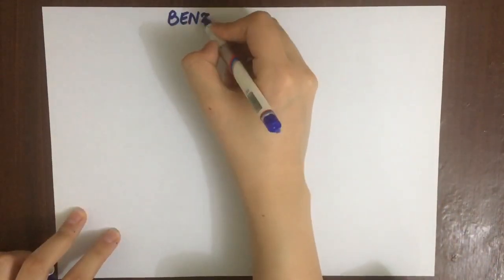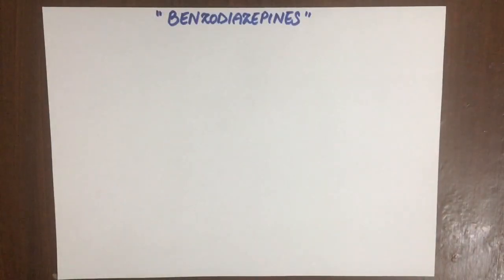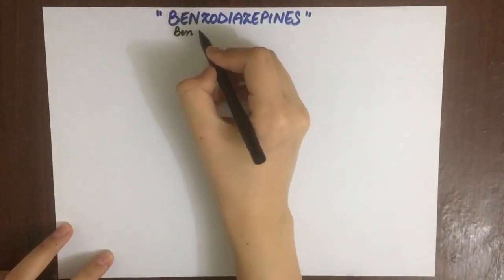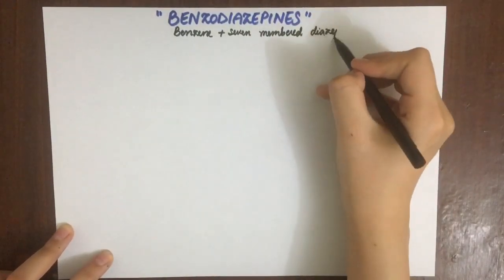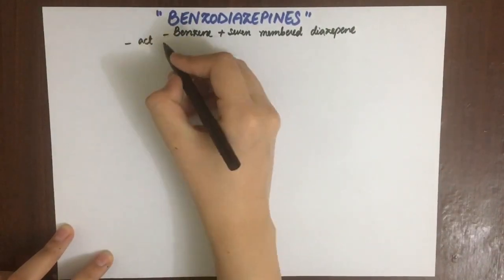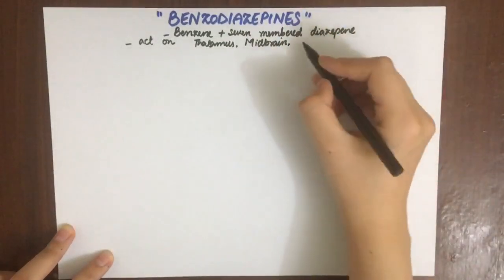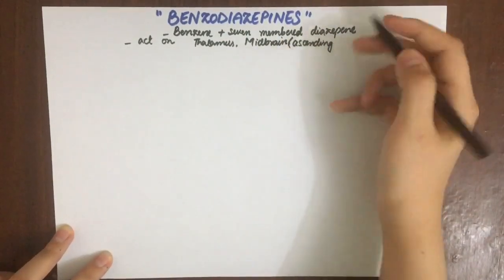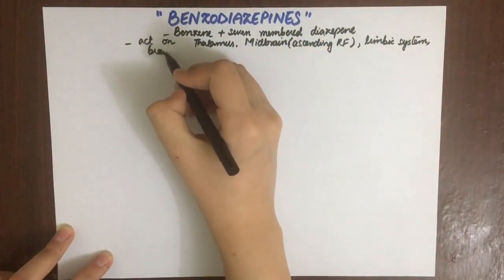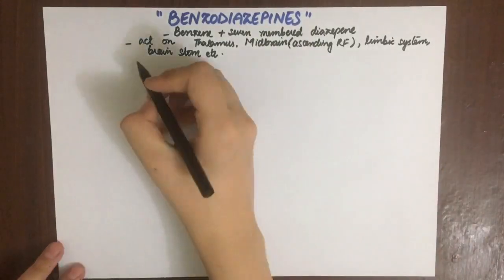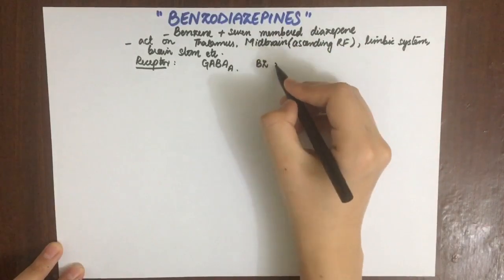Let's talk about benzodiazepines. Benzodiazepines have a benzene ring fused to a seven-membered diazepine ring. The site of action of benzodiazepines is the thalamus, midbrain, ascending reticular formation, which regulates wakefulness, the limbic system, and the brainstem.